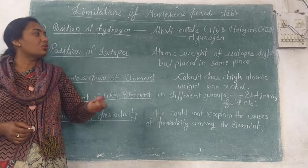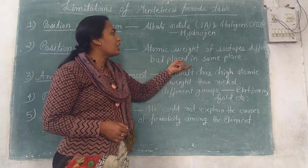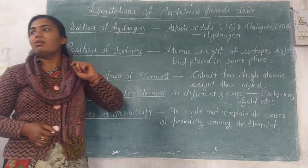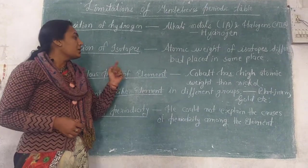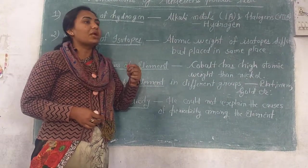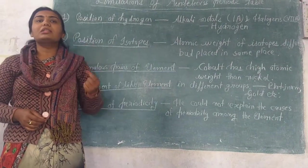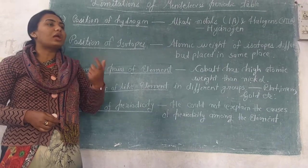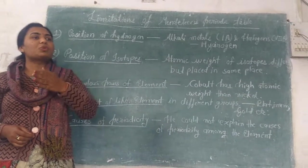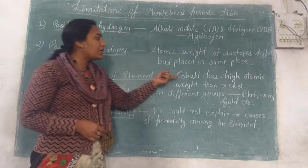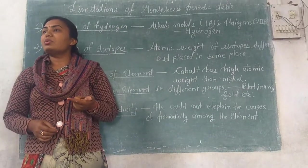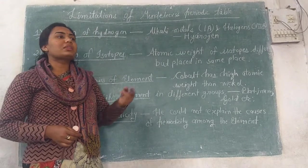The third limitation is anomalous pairs of elements. As atomic weight increases, elements should be placed in higher positions. But when an element like cobalt has a greater atomic weight than nickel, even after that, cobalt is placed before nickel in the periodic table.